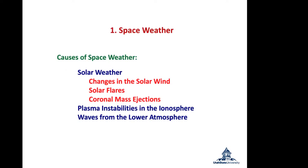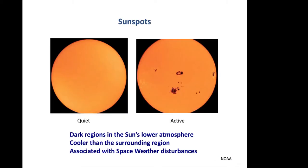The first topic is space weather. One of the main causes of space weather is solar weather: changes in the solar wind, solar flares, and coronal mass ejections. In addition, you have plasma instabilities in the ionosphere and waves propagating up from the lower atmosphere. Sunspots are dark regions on the sun's lower atmosphere, resulting from stormy, localized magnetic fields that choke the flow of energy from below, making them cooler and therefore dark.